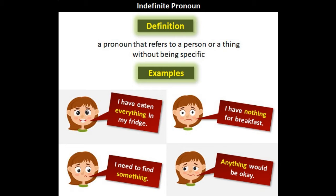Indefinite pronoun — جب ہم کسی غیر معین شخص، جاندار یا شے کے بارے میں کوئی بات کہتے ہیں تو اس جملے میں تعداد کا استعمال کیے بغیر any, one, none, all, some وغیرہ استعمال کرتے ہیں۔ مثال کے طور پر: "All the boys played well." اس جملے میں لڑکوں کی تعداد نہ بتا کر سارے لڑکوں کے لیے ایک لفظ استعمال کیا گیا ہے۔